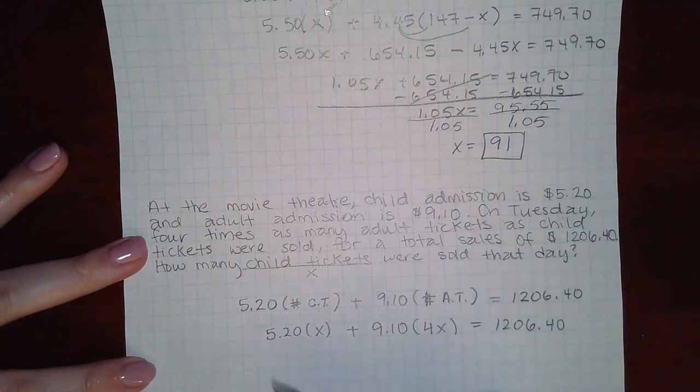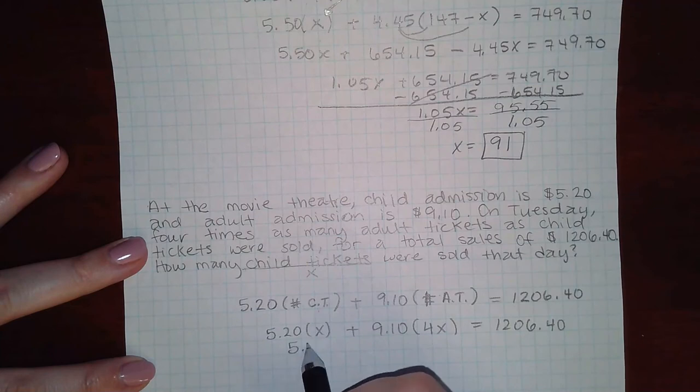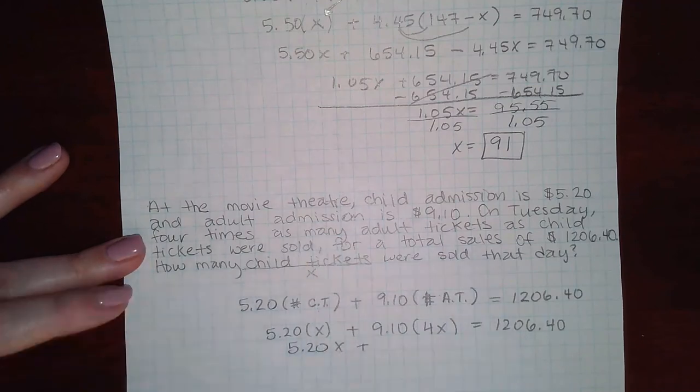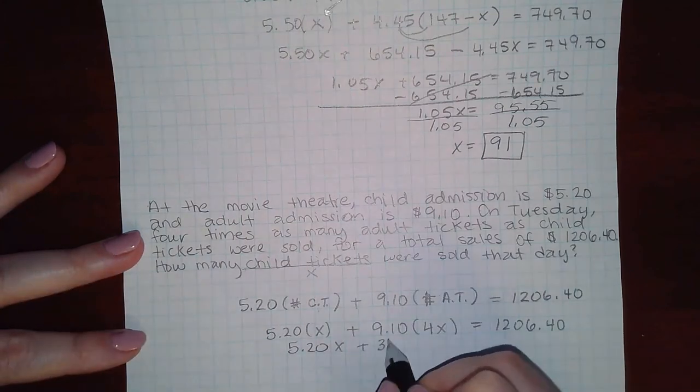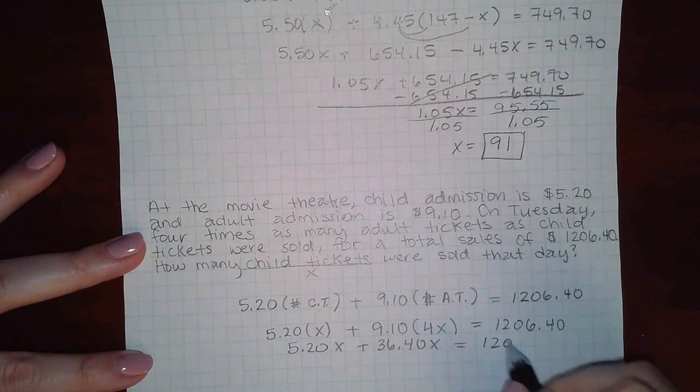So then if I multiply this out, I get 5.20X plus 36.40X. And if I combine my like terms.